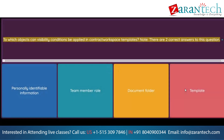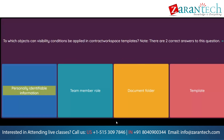Question: To which objects can visibility conditions be applied in contract workspace templates? Note: there are two correct answers. Option 1: Personally identifiable information. Option 2: Team member role. Option 3: Document folder. Option 4: Template.